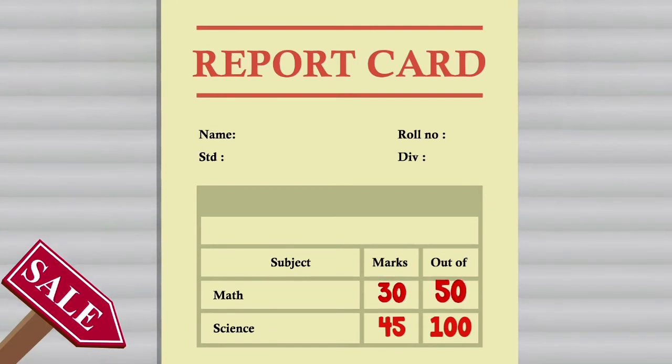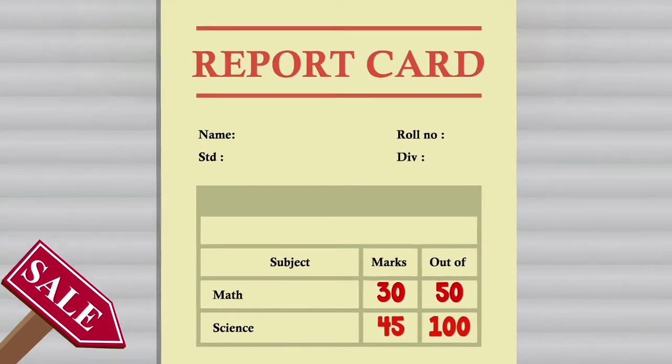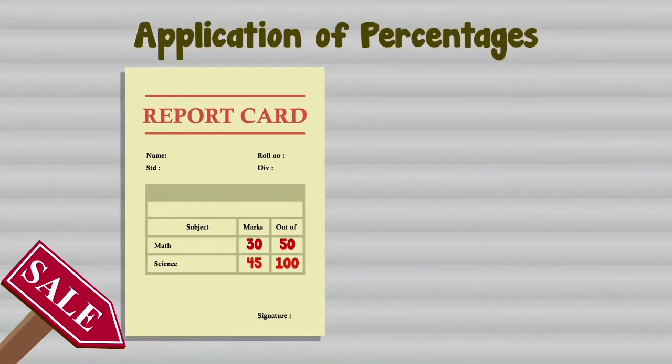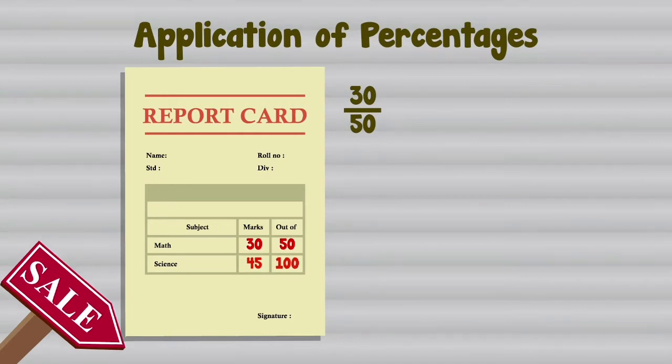You scored 30 out of 50 in math, which can be written as the fraction 30/50. You scored 45 out of 100 in science, which can be written as 45/100. Let us express 30/50 with denominator as 100.